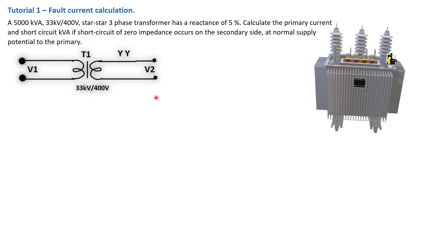Knowing the fault level ensures that in case it happens, things don't blow up — the circuit actually just trips and protects your network. Now, we have here a small problem statement: a 5,000 kVA transformer with 33 kV on its primary and 400 V on its secondary. It is a star-star three-phase transformer with a reactance of 5%.